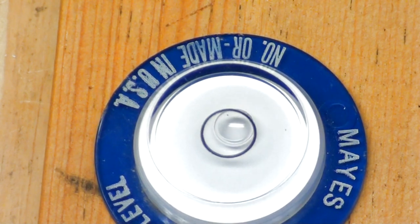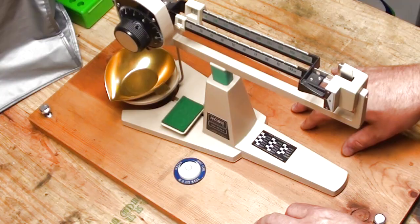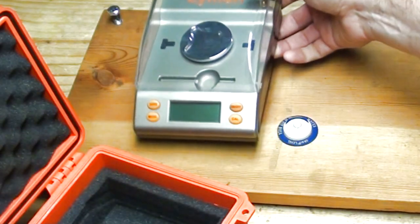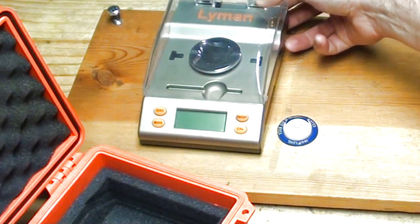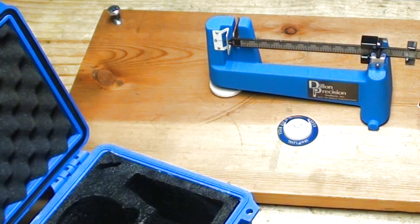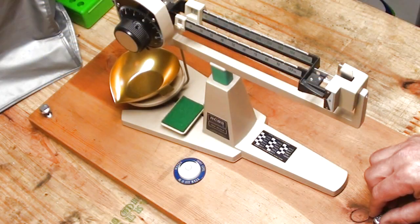Whether I'm using it on my main reloading bench or out in the backyard on a rickety old picnic table, no matter which scale I'm using—whether it's an electronic scale or a balance beam scale like this one—it's very easy to adjust.